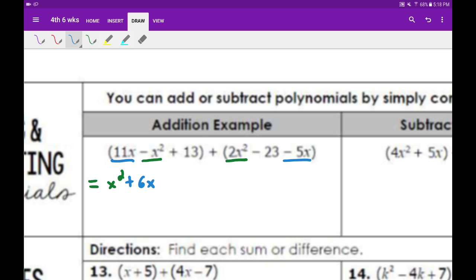Then we go down to the constant. We have a 13 and a negative 23. When we combine those, we get negative 10.